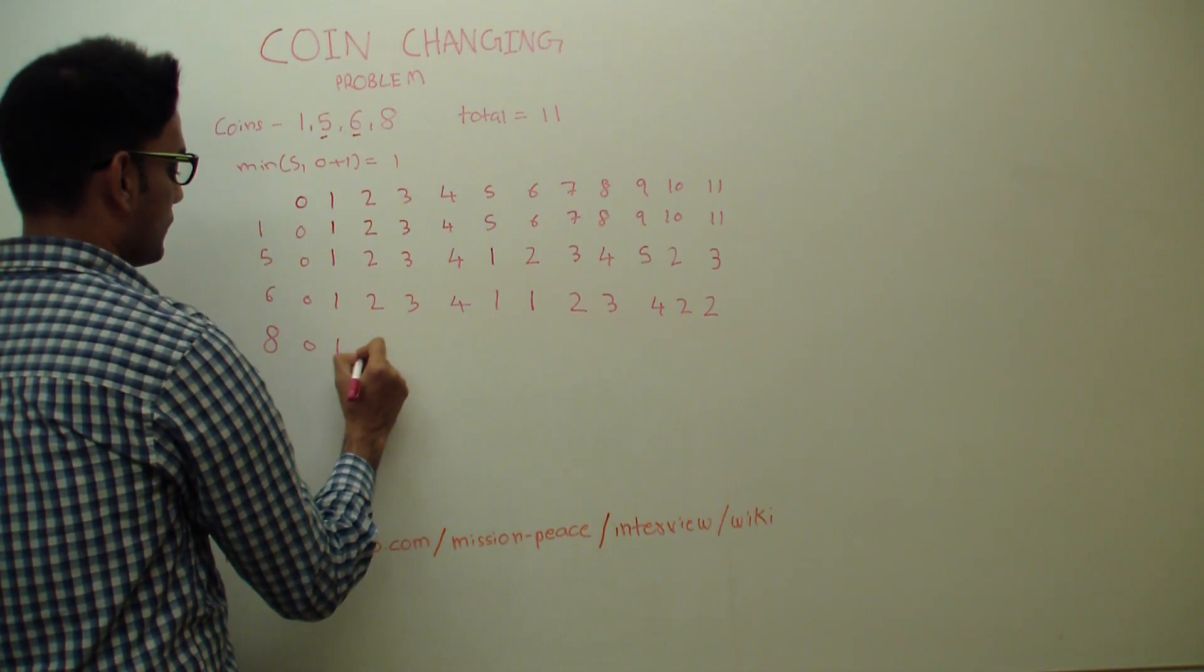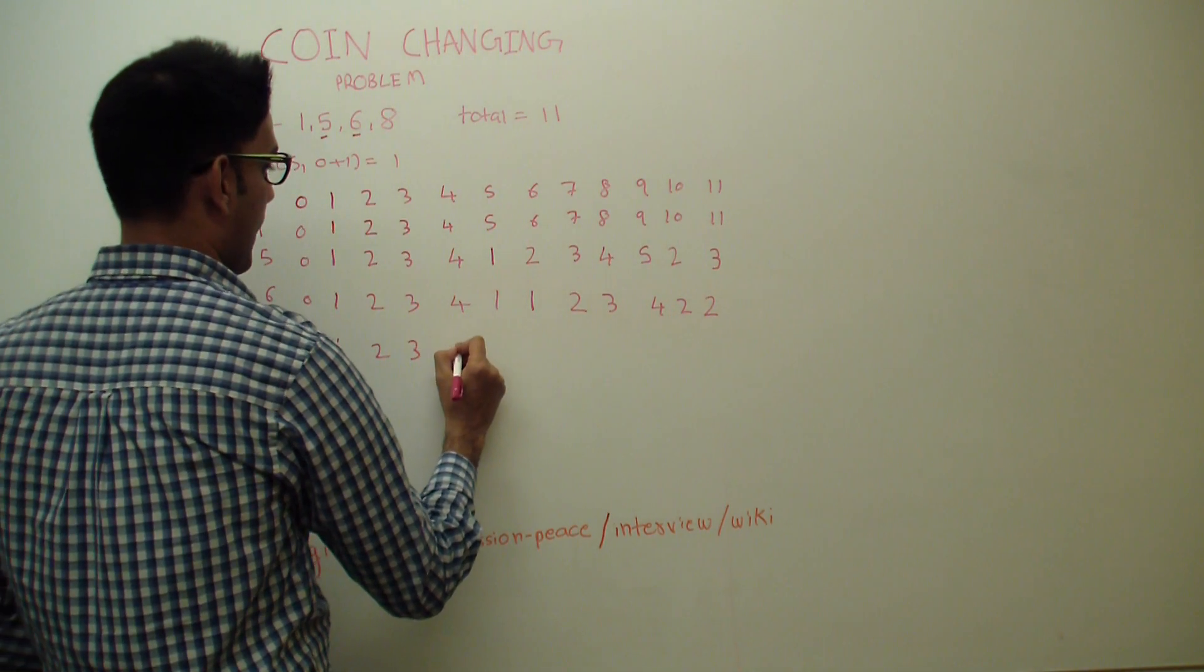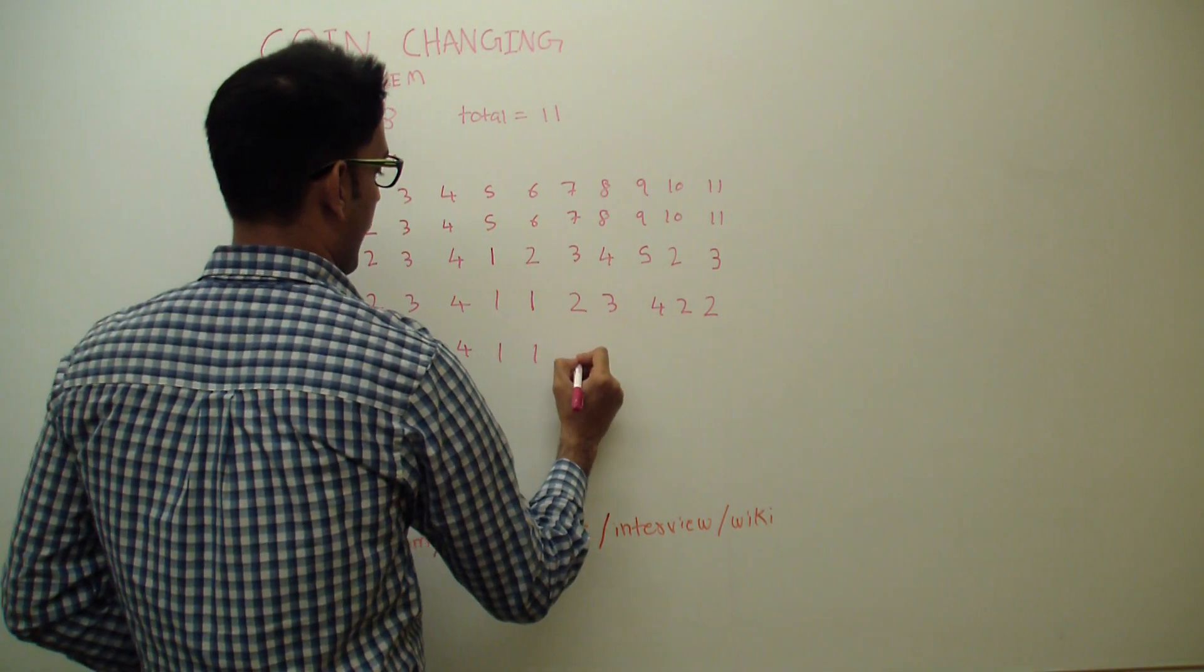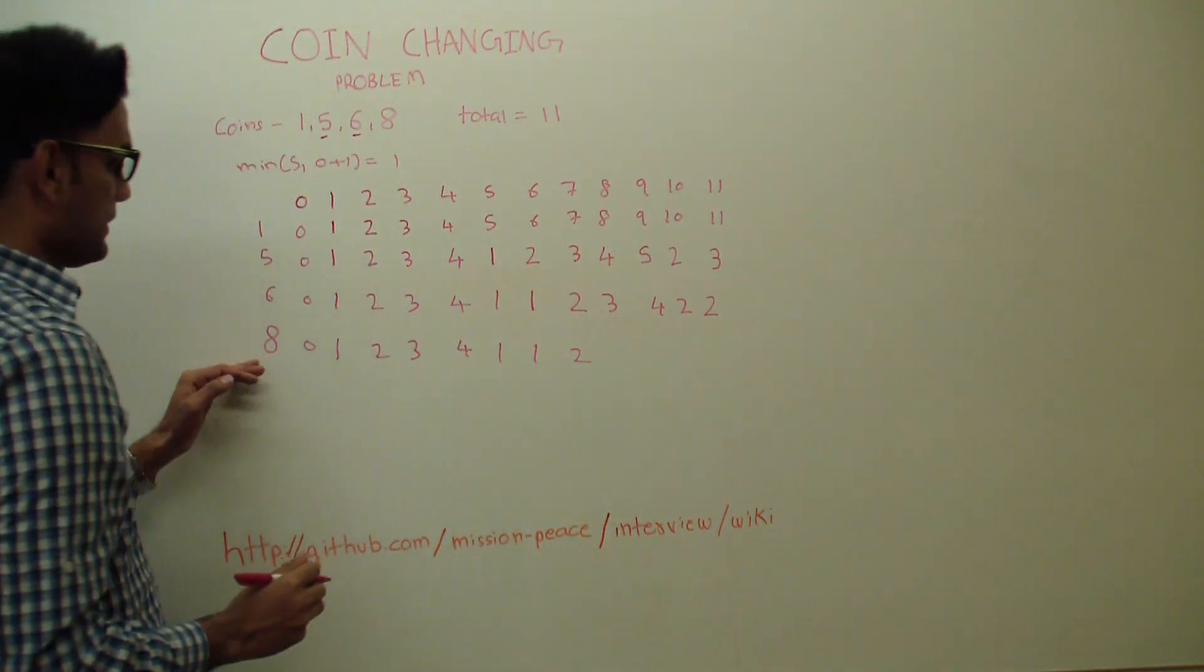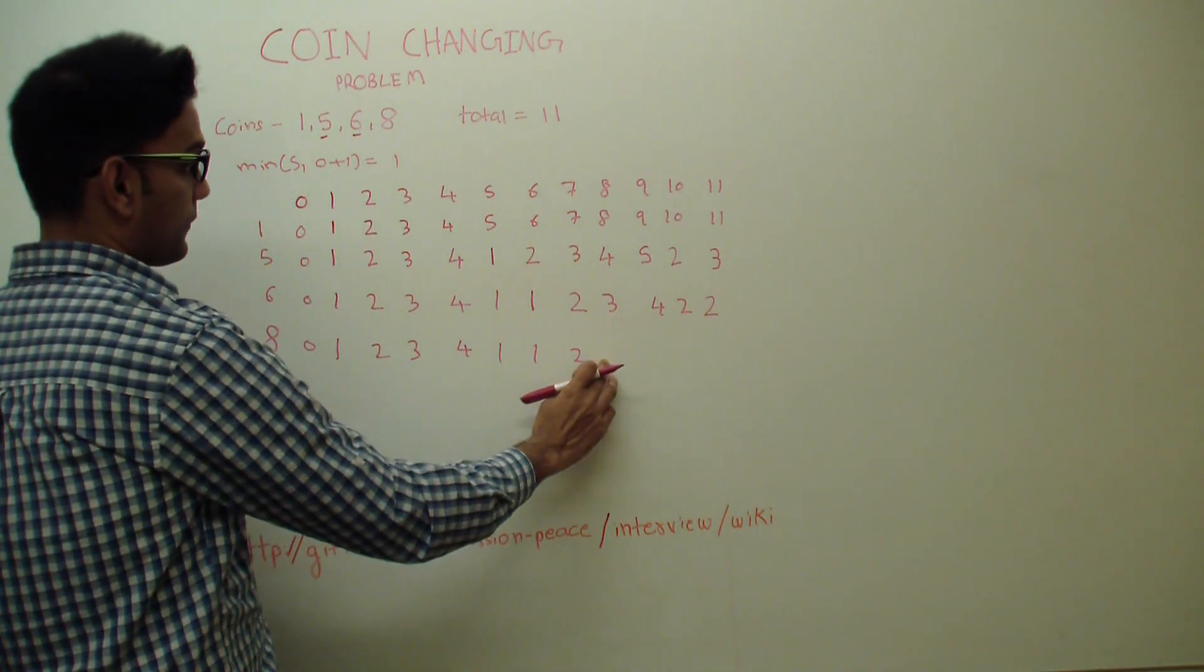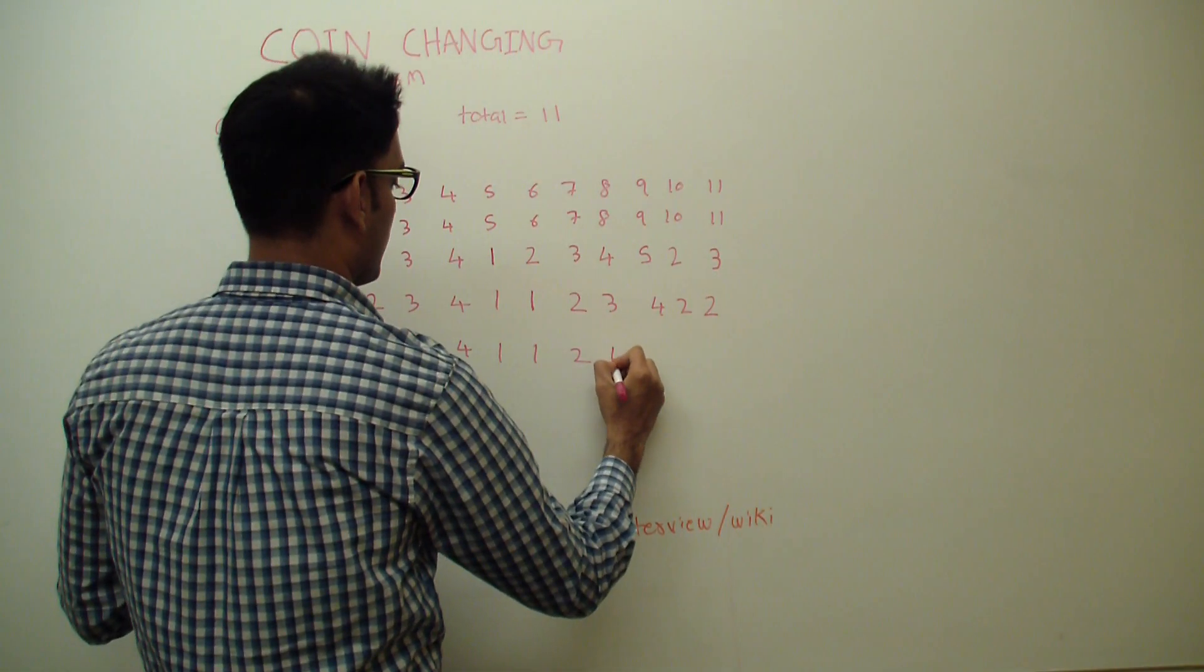Let's start for 8. So up till 7, 8 is going to be same. So for 8, we'll need 1 coin, so 1.